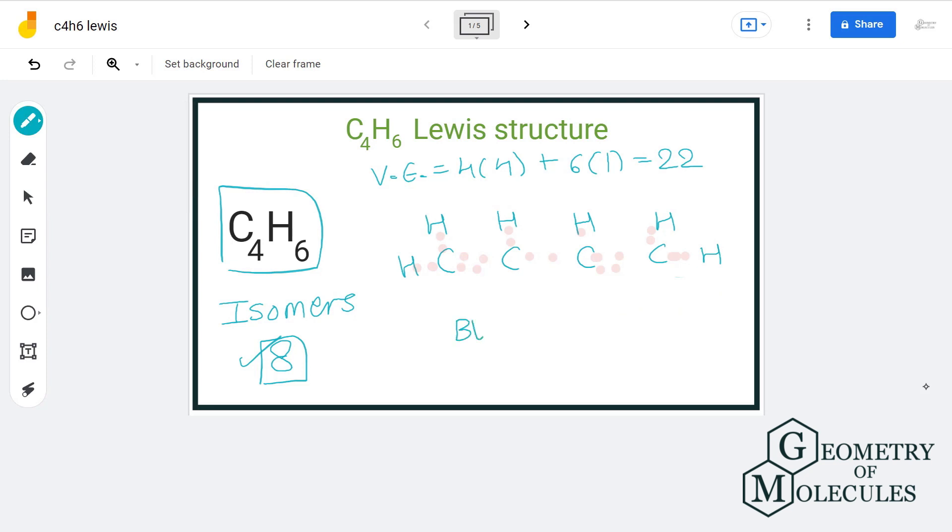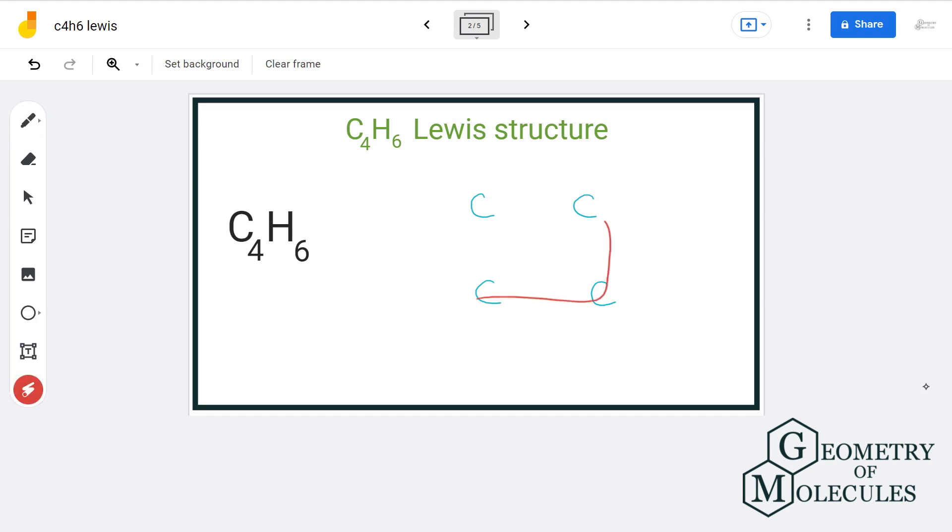Now the next compound is of the class cyclo compound in organic chemistry. As the name suggests there will be a ring formation where we will arrange carbon atoms in a loop-like structure and then attach hydrogen atoms somewhat like this.